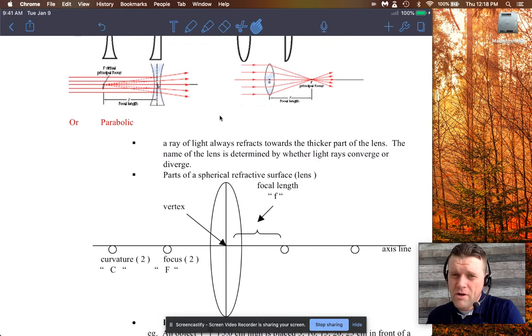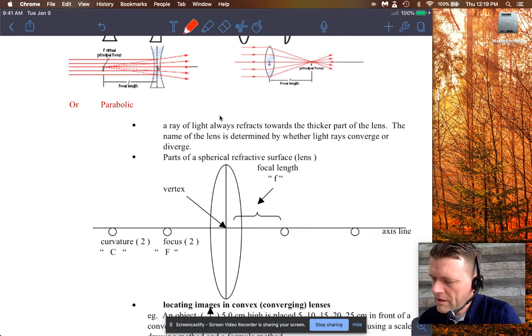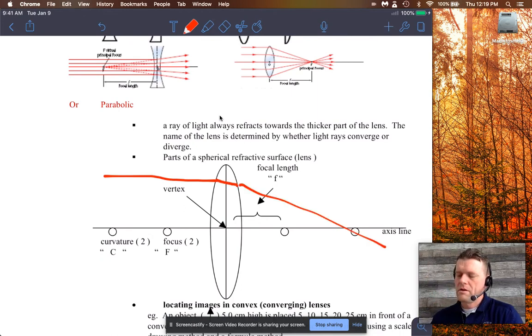If we are drawing ray diagrams, which are helpful to understand what happens to the light, what I need you to understand with lenses is the reason the light acts the way it does is because of refraction. As light would come into a lens like this, inside the lens there would be a little bit of refraction, and then it would bend again as it came out of the glass and back into air.